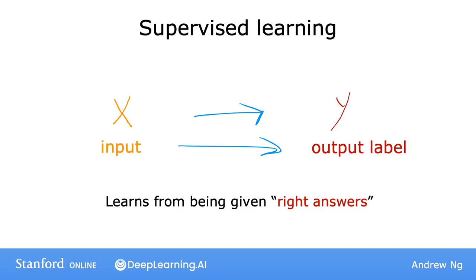By seeing correct pairs of input x and desired output label y, the learning algorithm eventually learns to take just the input alone, without the output label, and gives a reasonably accurate prediction or guess of the output.